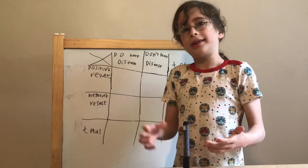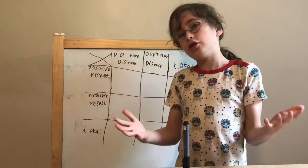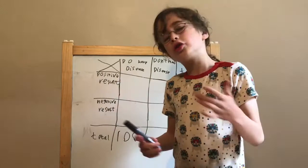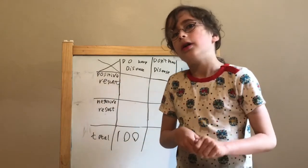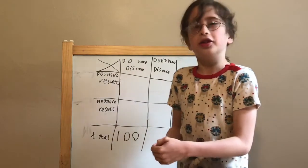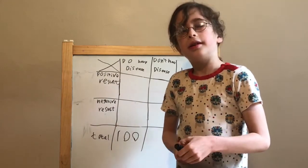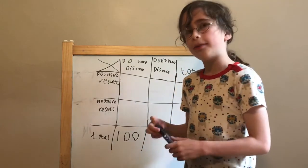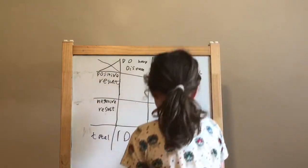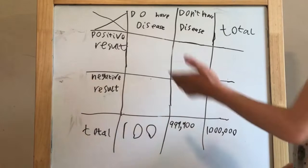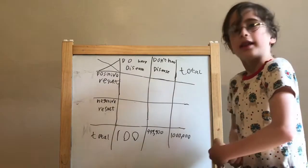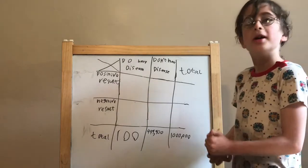So you might be thinking that it would only infect 100 in a million and you're right - 100 people out of a million get infected and 999,900 people don't get infected. So we're going to write that down here. So 100 people have the disease and 999,900 people don't.